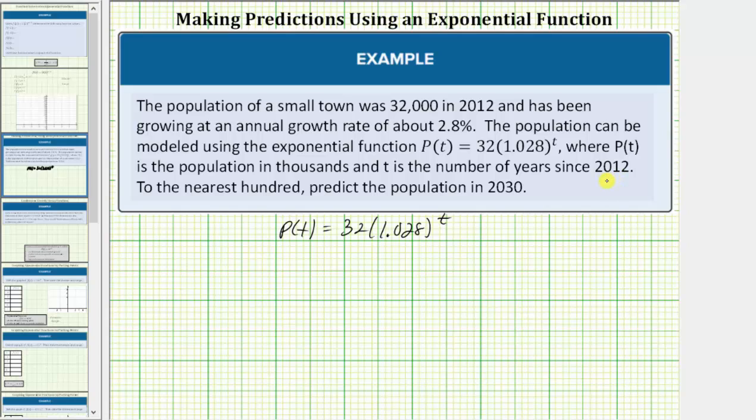The first step is to determine what value of t represents the desired year of 2030. Because 2012 is the base year, t = 0 represents the year 2012. Because 2030 is 18 years after 2012, t = 18 represents the year 2030.